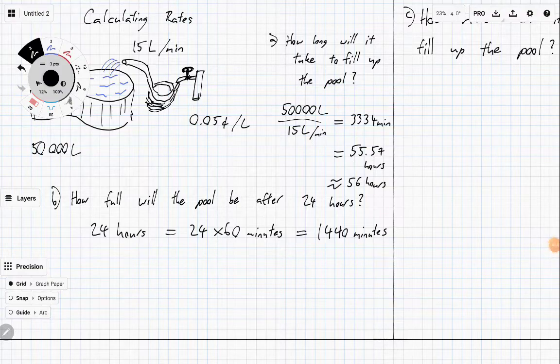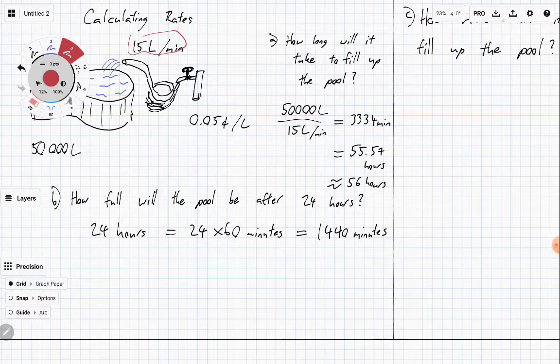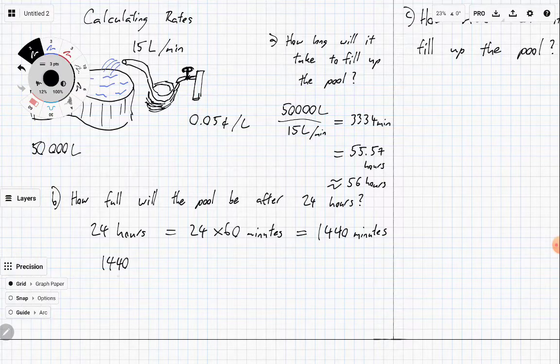But that was in the original question, we actually wanted to know based on 15 liters per minute. So let's use that now. Since we're doing it for 1440 minutes, and for each of those we're going to get 15 liters per minute, we're going to get the answer 21,600 liters is our final answer there.